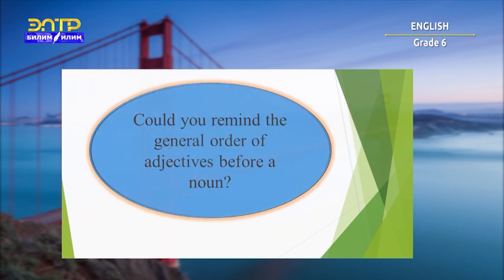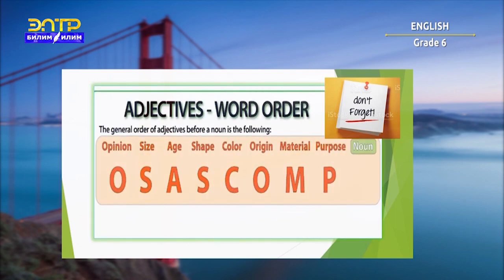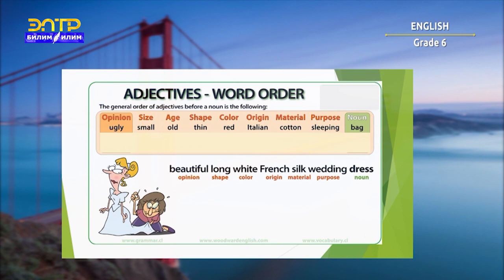What about the general order of adjectives before a noun? The general order is: opinion, size, age, shape, color, origin, material, purpose. For example with the noun 'bag': ugly (opinion), small (size), old (age), thin (shape), red (color), Italian (origin), cotton (material), sleeping (purpose), bag (noun).